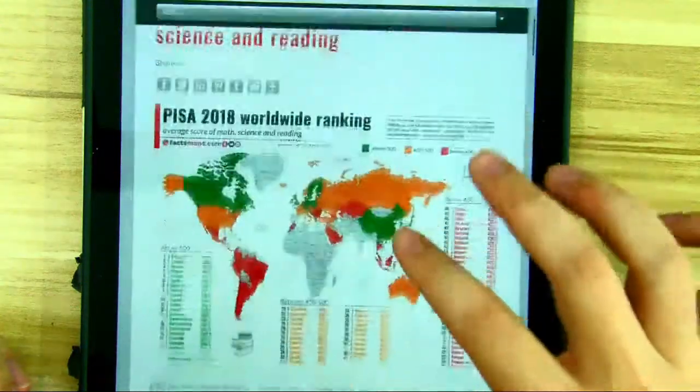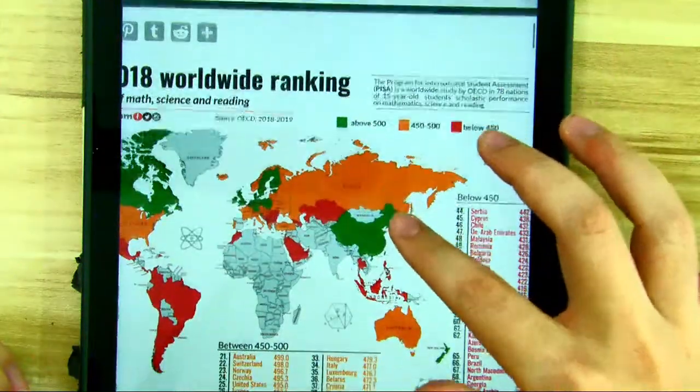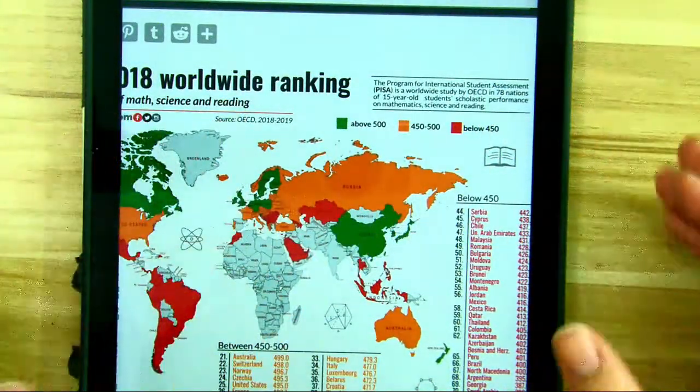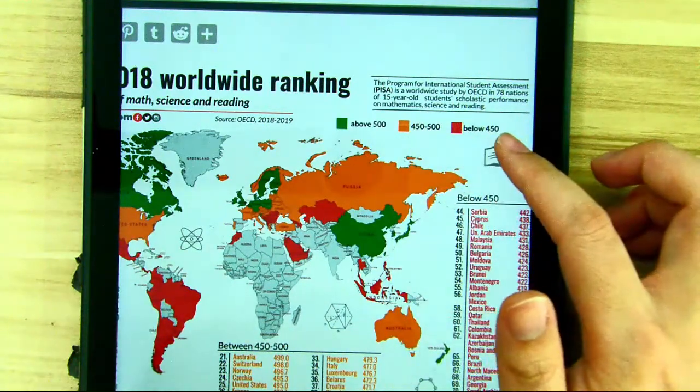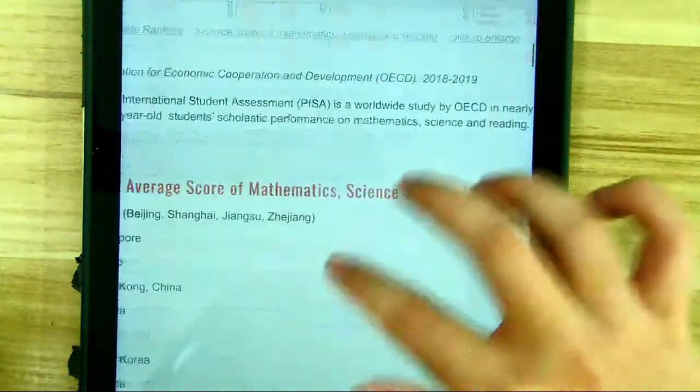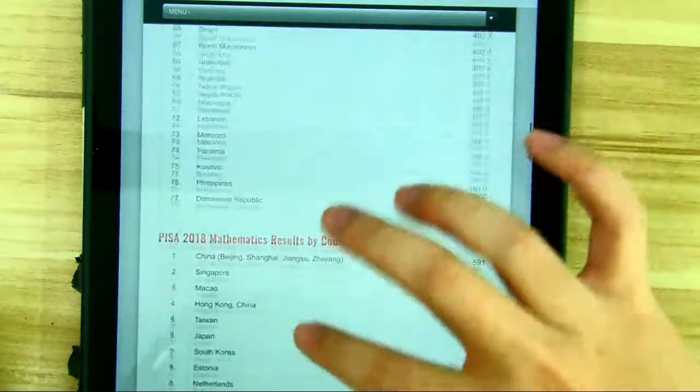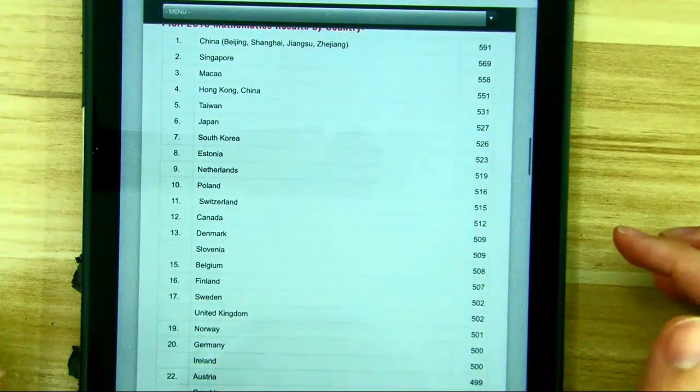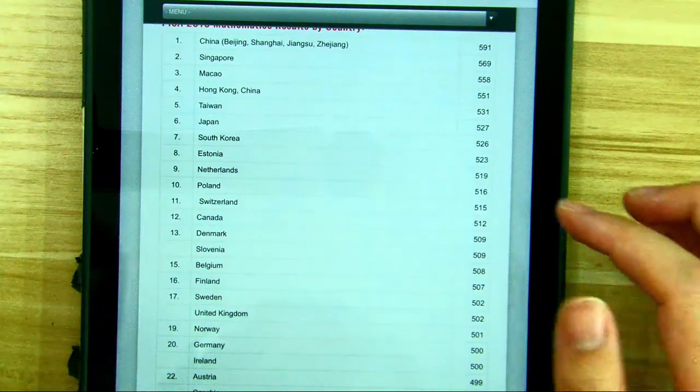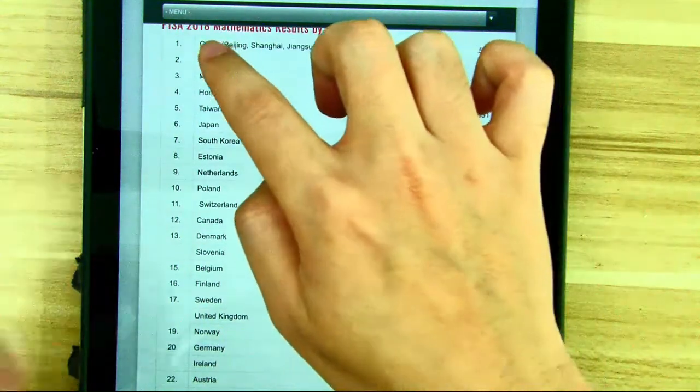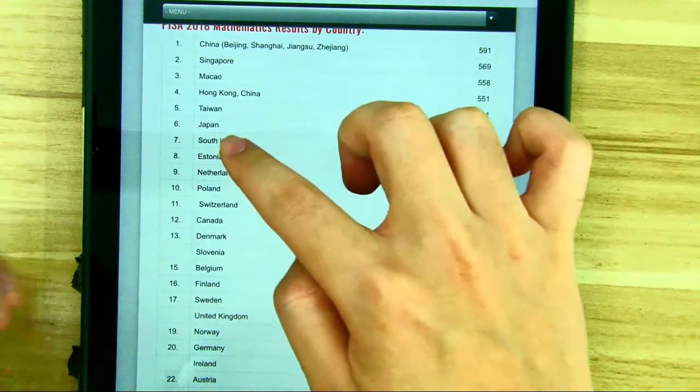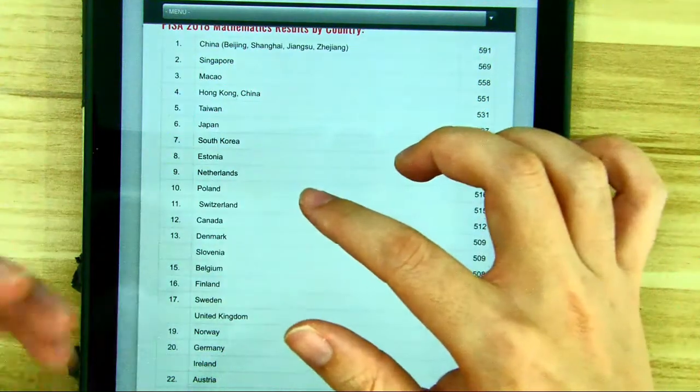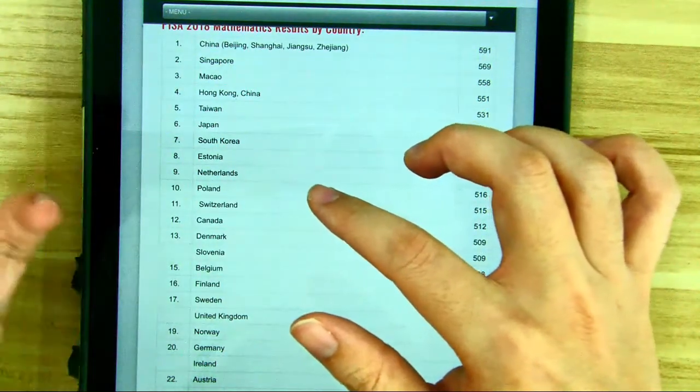Actually, PISA is a research and an assessment to the 15-year-old students' performance on math, science and reading. Let's focus on math. You can see that starting from the first place is China, Singapore, Macau, Hong Kong, Taiwan, Japan, and South Korea. So all the top sevens are all Asians.